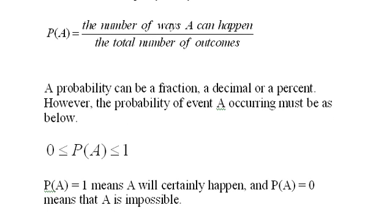A probability of A equaling one means that A will certainly happen, it's a certainty. The probability of A equaling zero means that A is impossible, it won't happen.